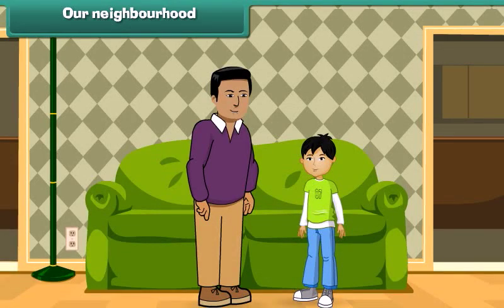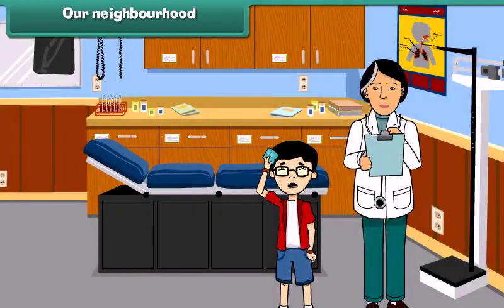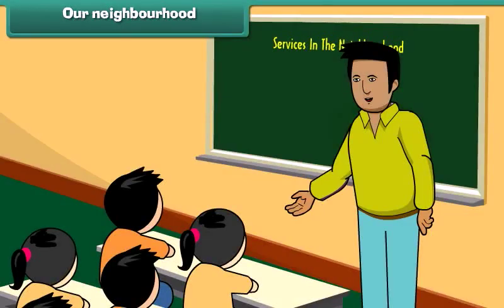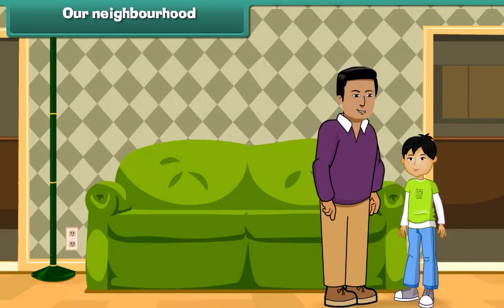Sam, we are human beings and we live in a society, and hence we need each other's help many a times. As you know, we need doctors when we fall ill, we need teachers to teach us, we need a watchman to keep our home safe. We get all this from our neighborhood. Son, now let's go outside and I will introduce you to some of the neighborhood places.